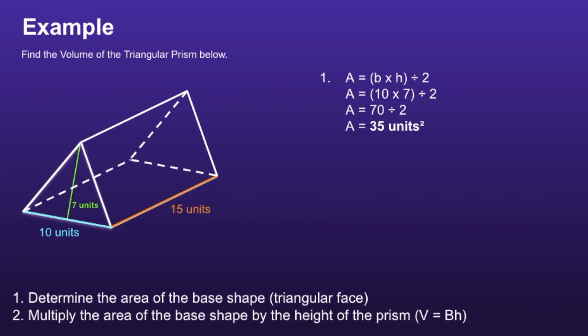This moves us on to step number 2: multiply the area of the base shape by the height of the prism. So we have the formula V equals big B times H. And in step 1, we determined the area of the base shape, which was 35 units. So I can replace the big B with the number 35.